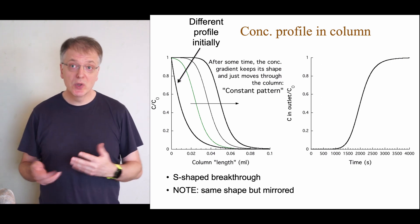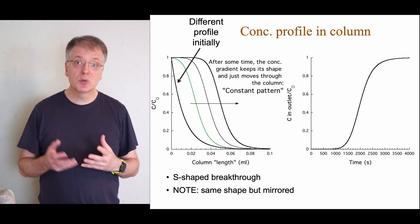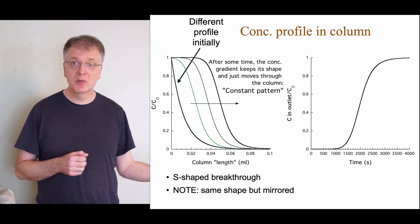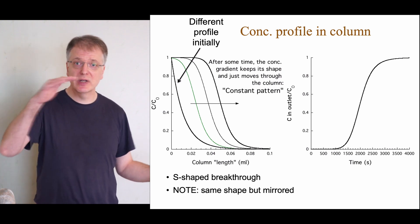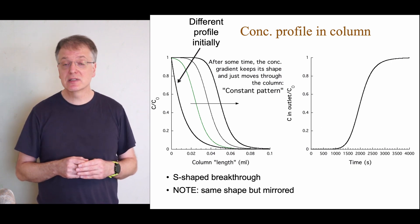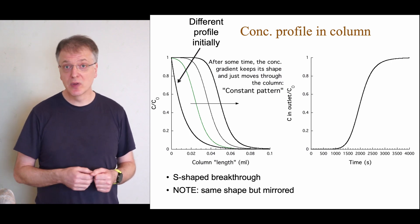The initial broadening of the profile is due to dispersion and diffusion. If the adsorption isotherm is favorable, the low concentration part of the profile will be slowed down compared to the rest of the profile, which counteracts the broadening. We will come back to this so-called self-sharpening of the concentration profile in the video on upscaling.